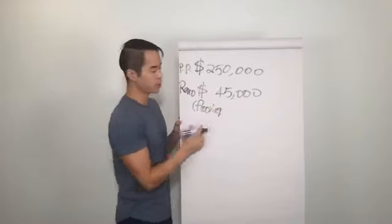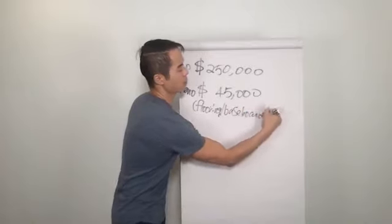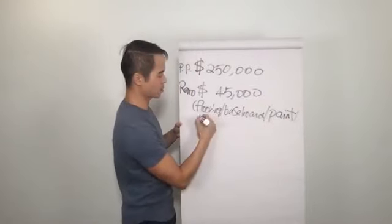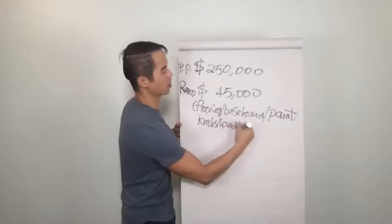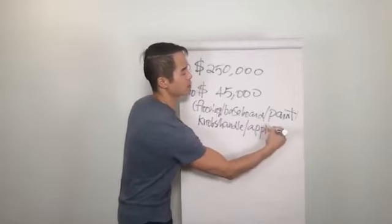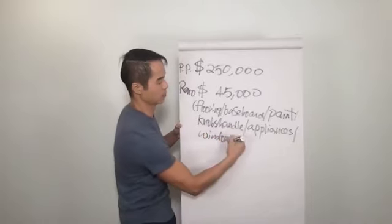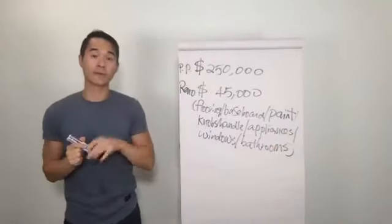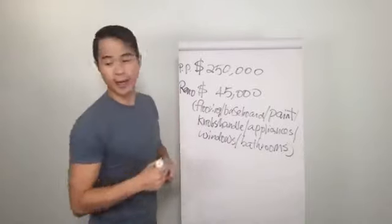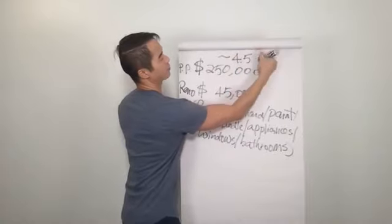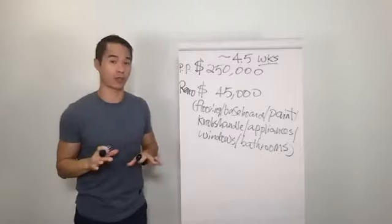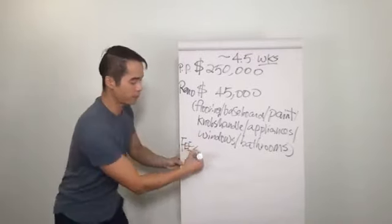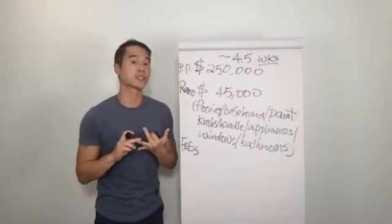Purchase price was $250,000 and the renovation cost based on the best, most valuable quote we got was $45,000. This includes a complete flooring upgrade, that also means baseboards, then fresh coat of paint throughout - this is all interior work. Then we changed the door knobs and the handles. We did not get a brand new kitchen, however we upgraded appliances, we upgraded the windows, and we upgraded two bathrooms in the entire unit. That's what $45,000 got us. In and out, we were in and out in about 4.5 weeks, pretty fast, just a bit over a month.